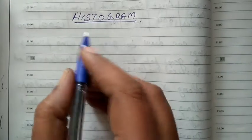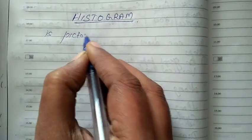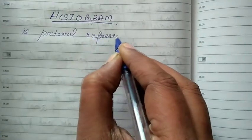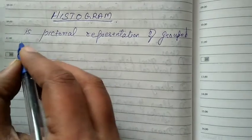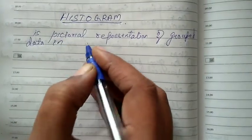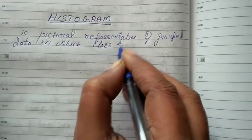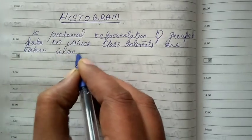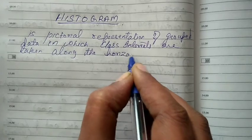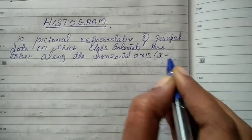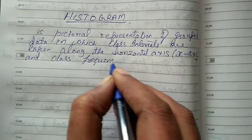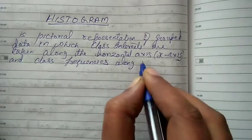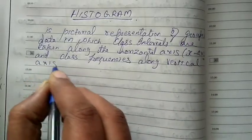Histogram is a pictorial representation of grouped data in which class intervals are taken along the horizontal axis — that is the X-axis — and class frequencies along the vertical axis, that is the Y-axis.